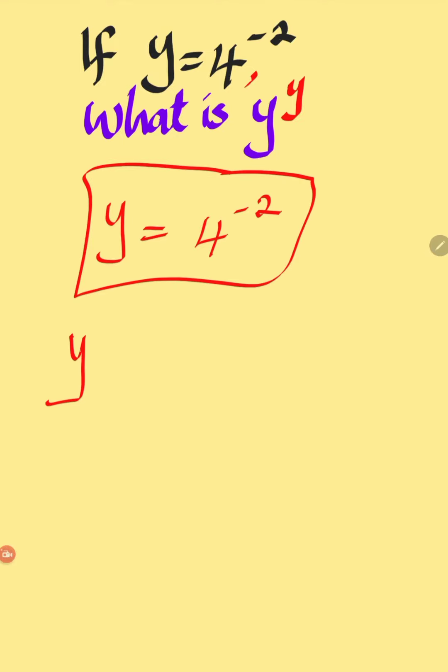Now, our target is to find y to the power of y. So this is just the same thing as 4 to the power of minus 2, then to the power of 4 to the power of minus 2. It is better that we simplify this first, then we can match them together to get the required solution.